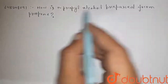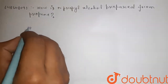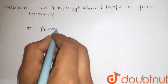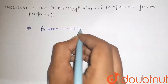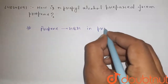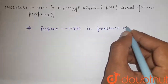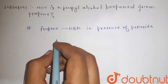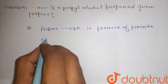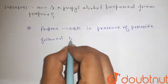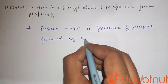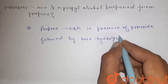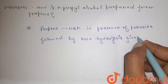Hi guys, here is the question: how is n-propyl alcohol prepared from propane? Propane on addition with HBr in the presence of peroxide, followed by base hydrolysis, gives propanol.